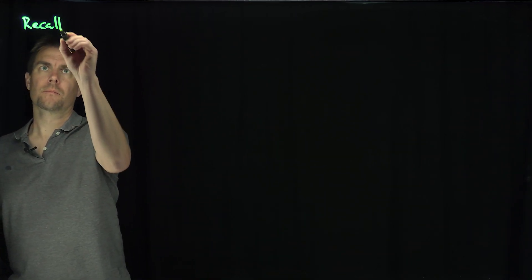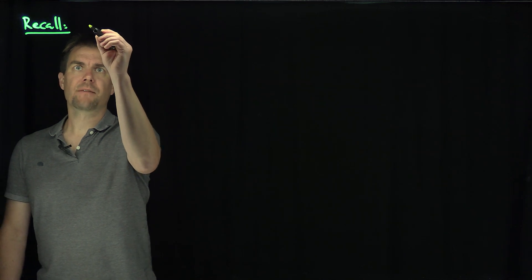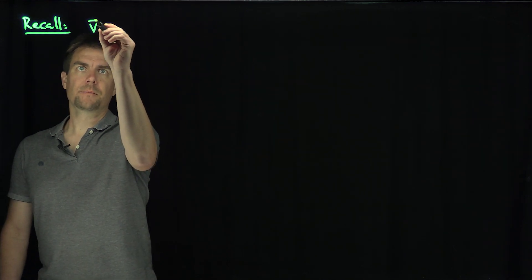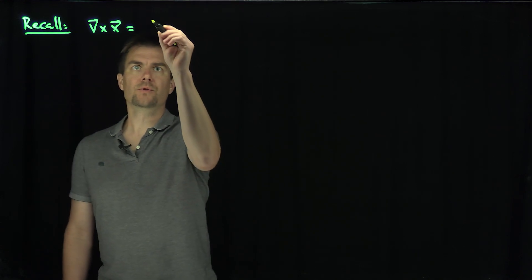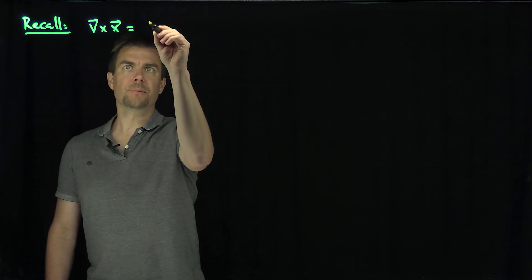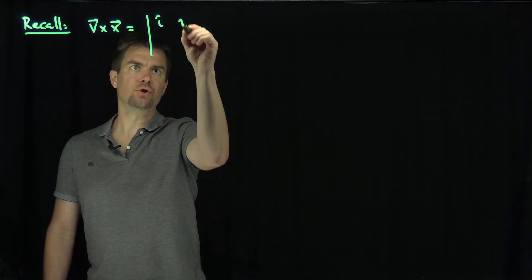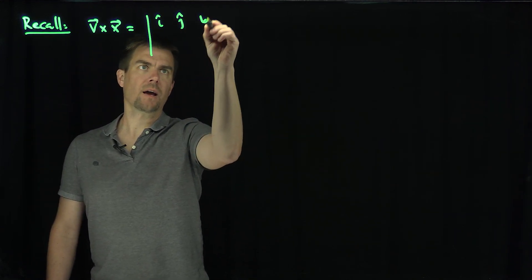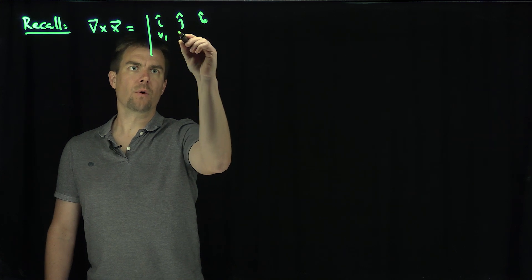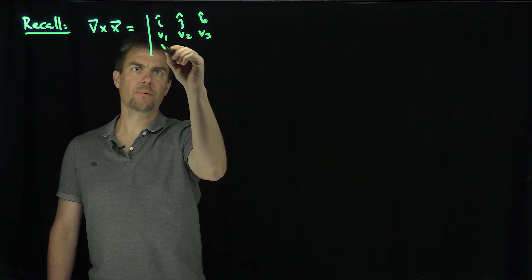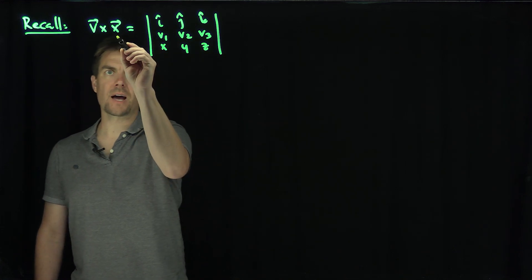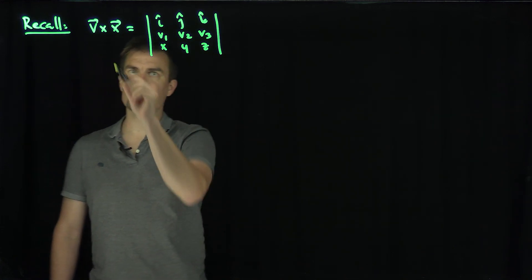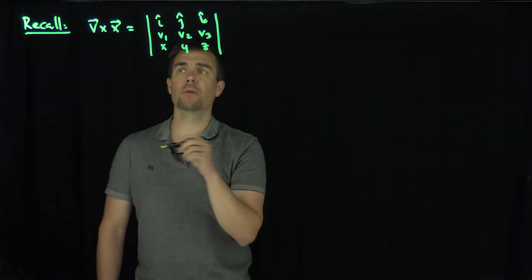Let's recall that if I have a vector v cross x, this will be the determinant of i, j, k, and then v1, v2, v3, x, y, z. So here I'm using the notation that x is really (x, y, z) and v is (v1, v2, v3).